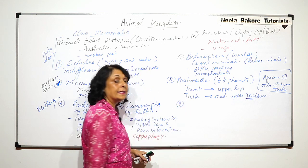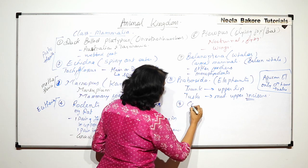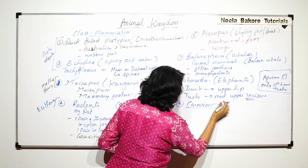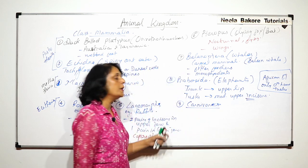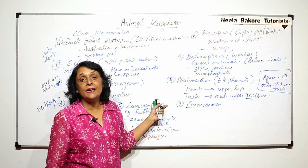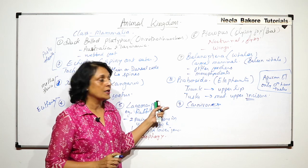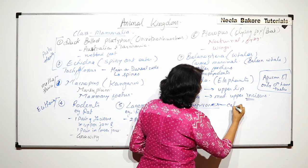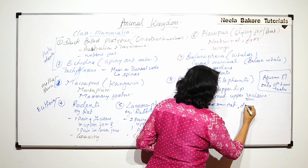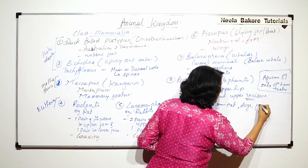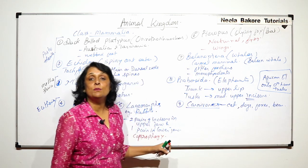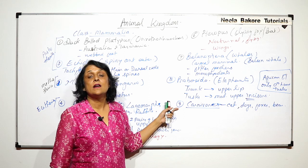Now let us come to another category, that is carnivores. Carnivores, we know they eat meat, they kill animals, and for that they have large, long canines. In this we would include cat family, that is lions, tigers, leopards, dogs, foxes, bears. These are the animals which are considered as carnivores.